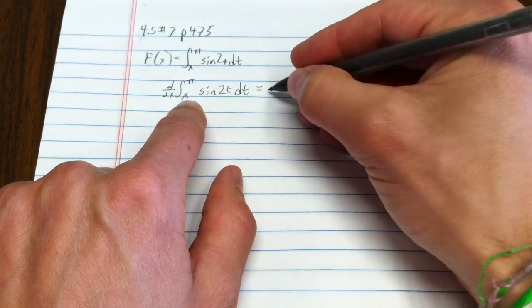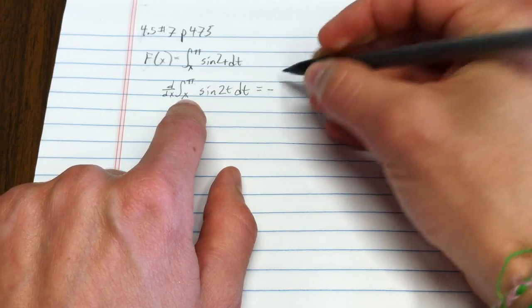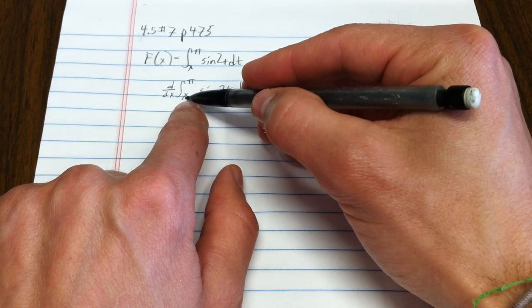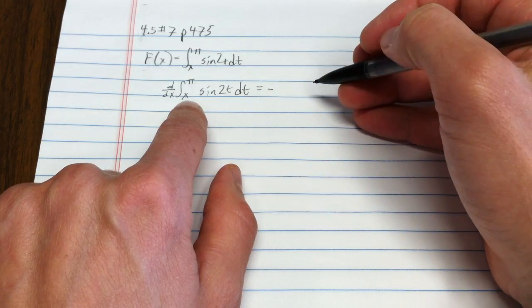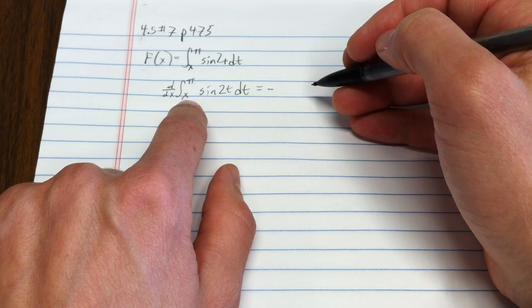So we're going to have a negative, because the change in the area under the curve happens at the left edge of the integral.